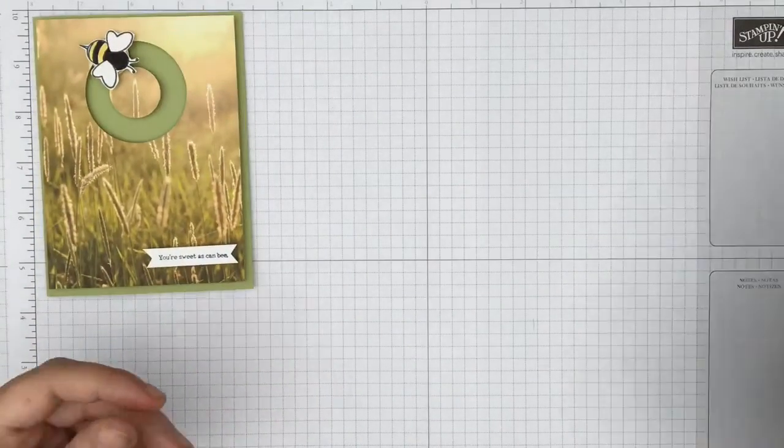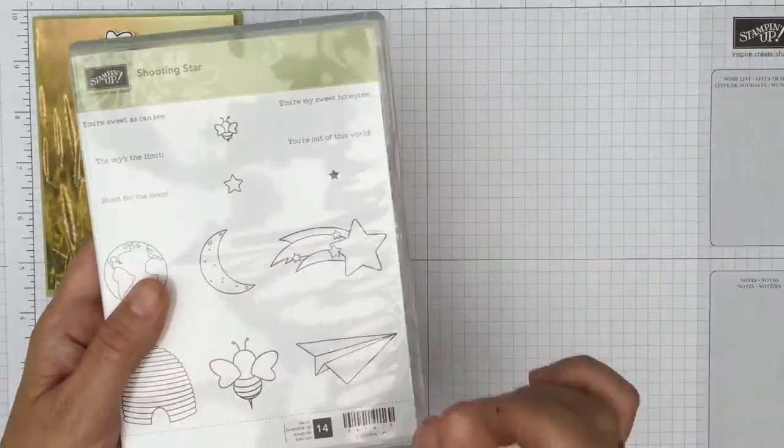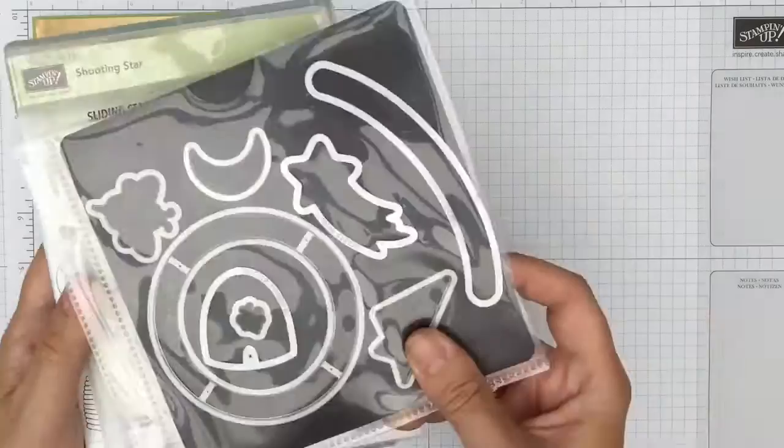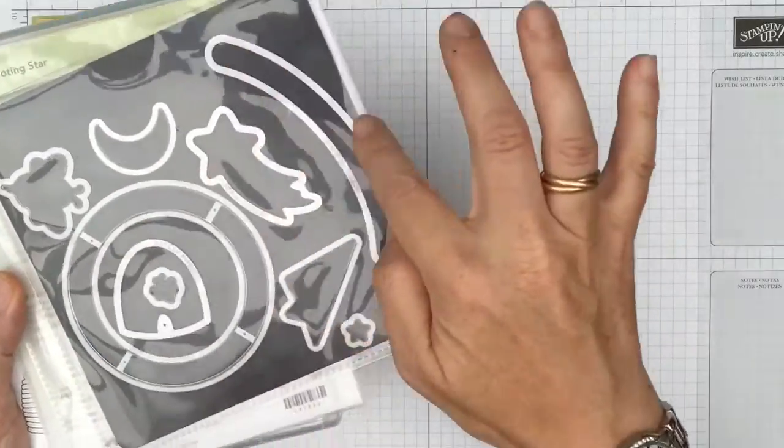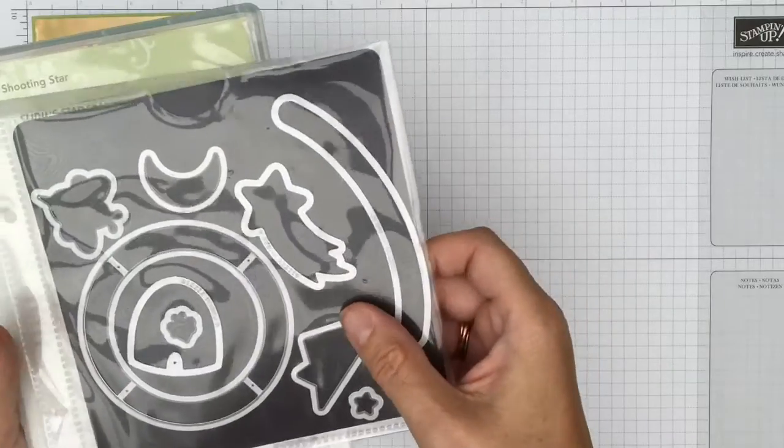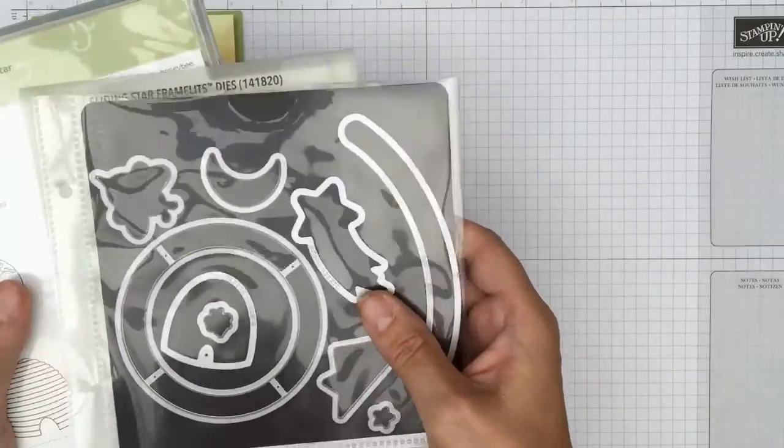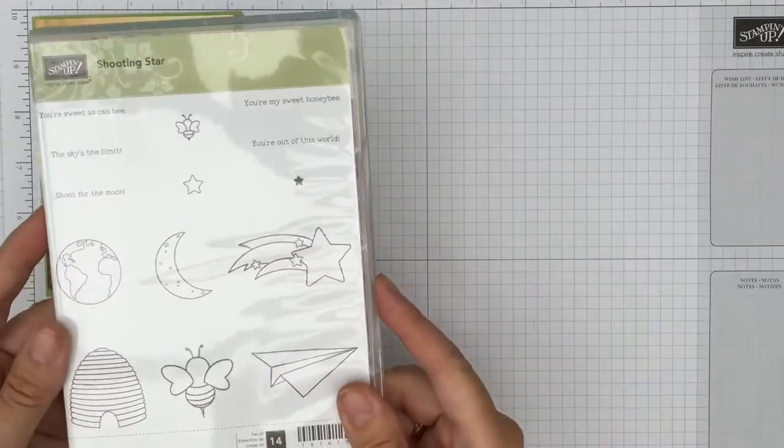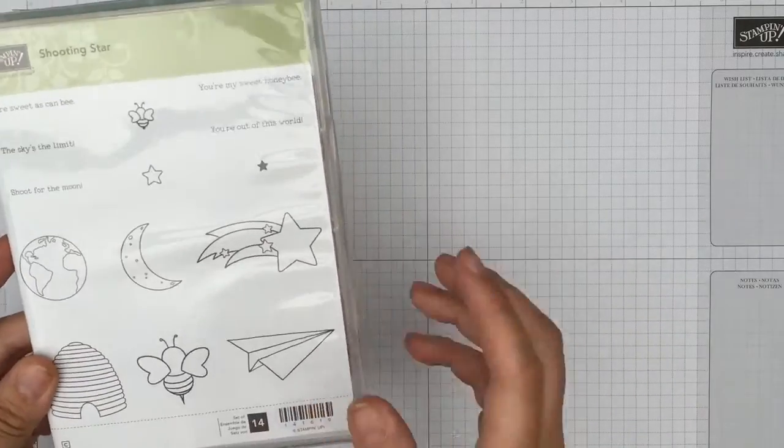This week we've been using the Shooting Star stamp set along with the Sliding Star framelits. The framelits have been giving us the aperture to make our spinner cards. So I got to thinking, what happens if you don't have a Big Shot? Can you still use a stamp set? Well, of course you can, so I'm going to show you how.